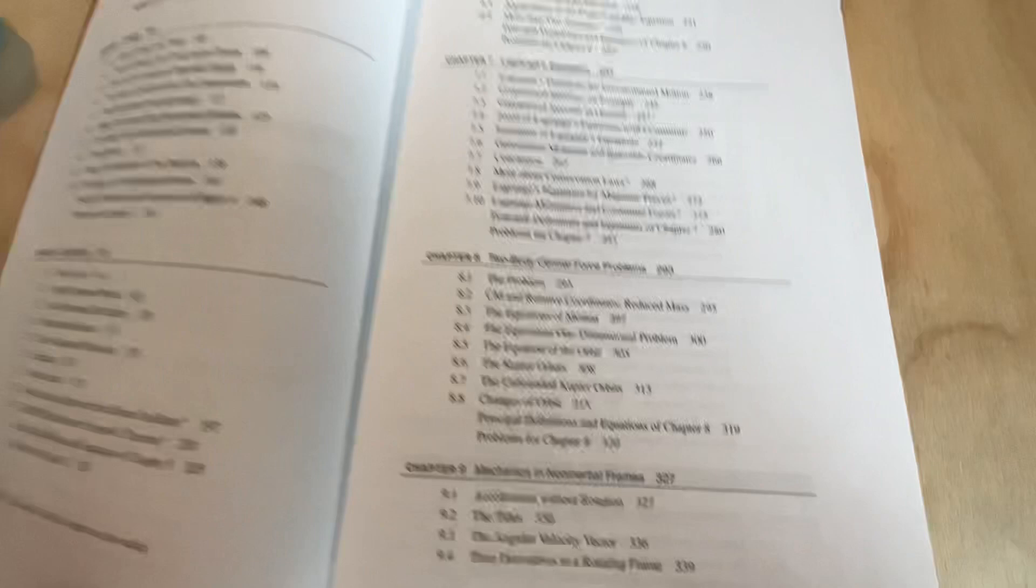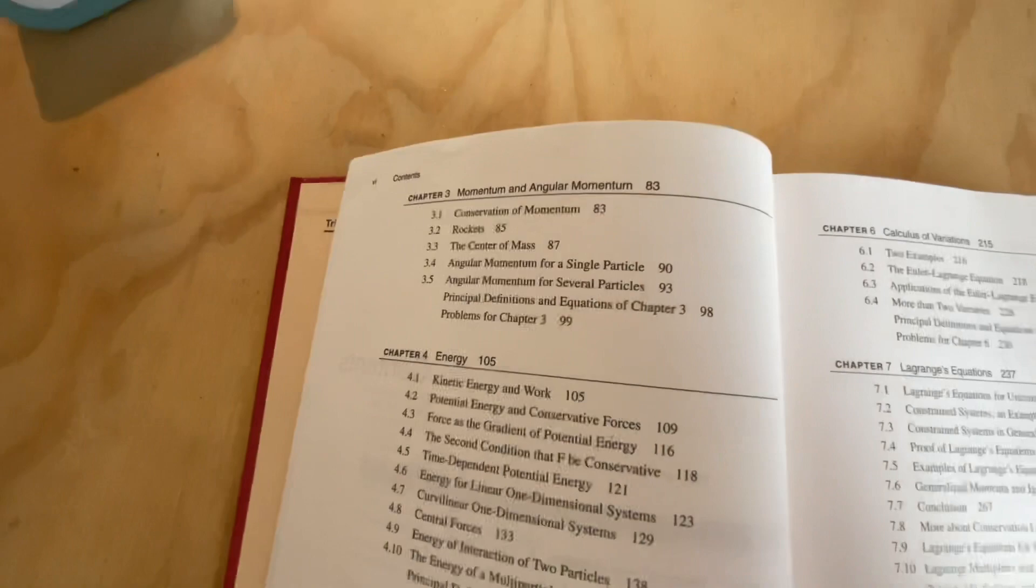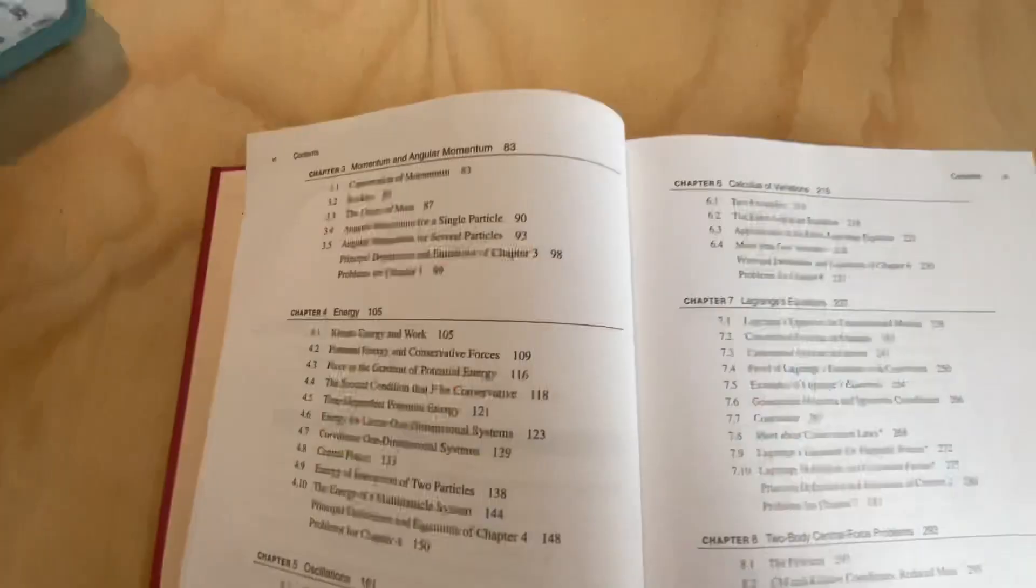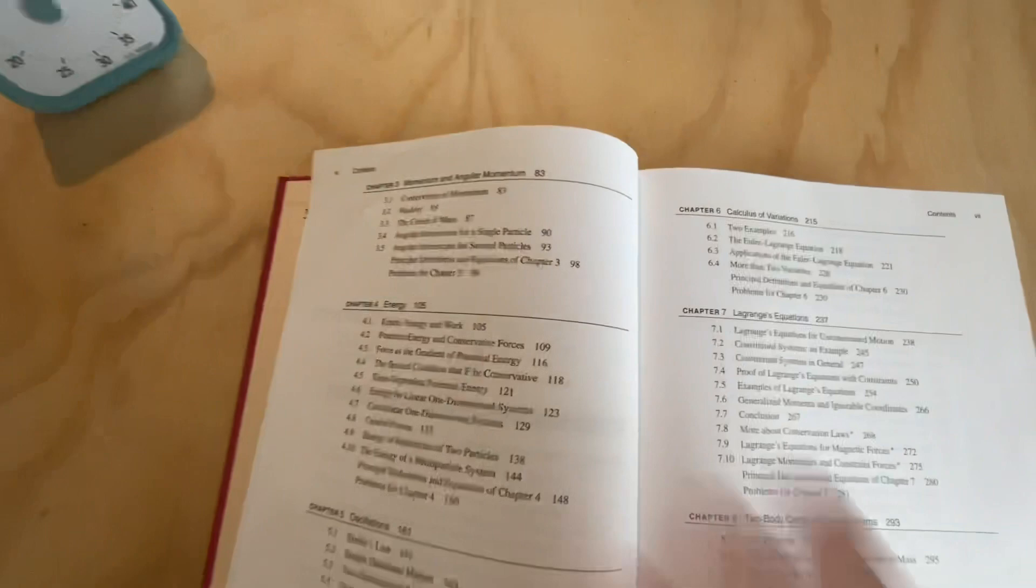Chapter three, we move on to momentum and angular momentum. Once again, this is pretty elementary. If you've had a really robust classical mechanics course in an undergrad, you would probably seen pretty much all of this, the chapter one, two, and three so far. So it talks about rockets also, which is like the continuous loss of mass as the body is accelerating, center of mass and some other concepts.